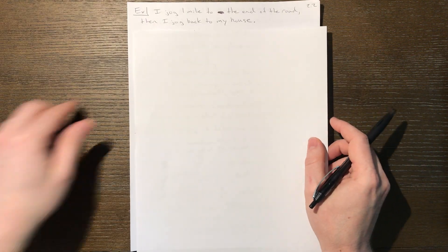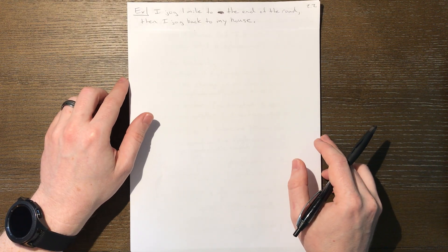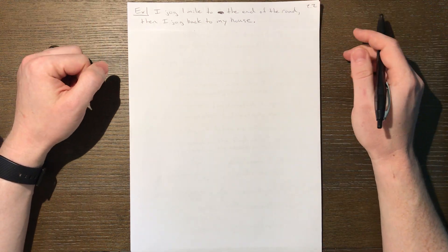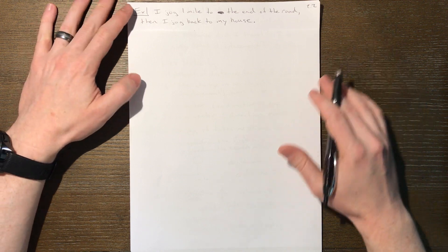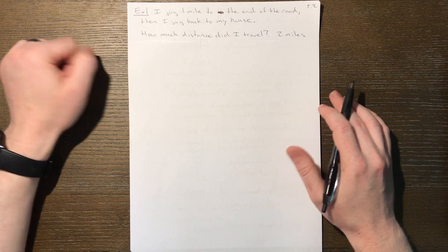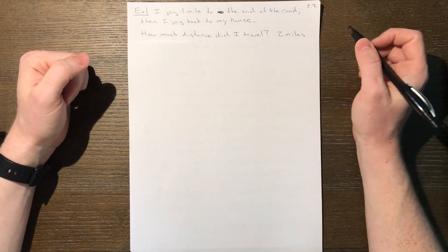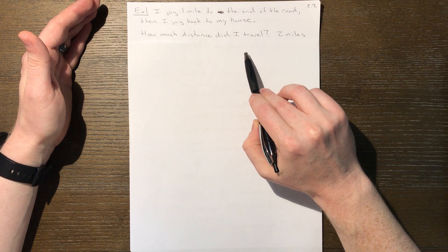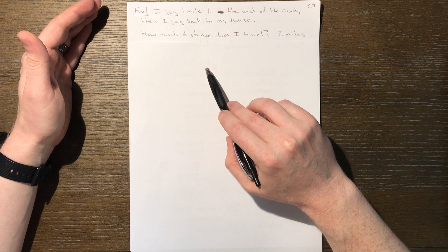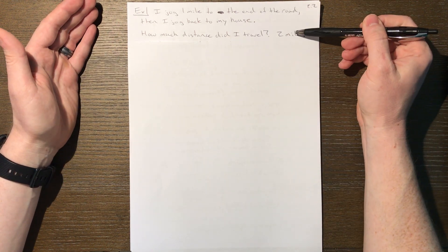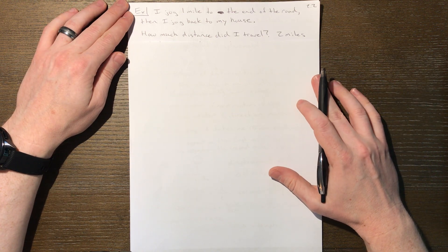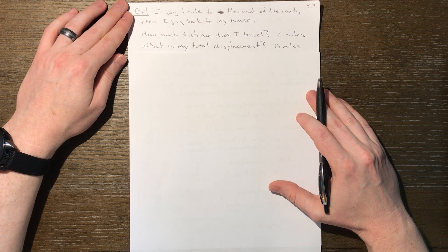All right, so let's just work one simple example discussing distance and displacement. In this example, let's consider a little exercise for me. Let's say I jog 1 mile to the end of the road, and then I jog back to my house. How much distance did I travel? Well, if we're talking about distance, it is the total ground covered. I went 1 mile to the end of the road, and if I go back, well, I have to cover that 1 mile back. One plus one is two - I must have traveled 2 miles. That is how much ground went past me as I did all of my jogging.